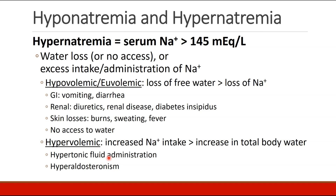Hypovolemic hypernatremia could occur with vomiting or diarrhea, with diuretics, renal disease, or diabetes insipidus, excess losses through the skin due to burns, sweating, or fever, or a patient who has no access to water. On the other hand, hypervolemic hypernatremia occurs when sodium intake exceeds total body water intake — due to hypertonic fluid administration or hyperaldosteronism.